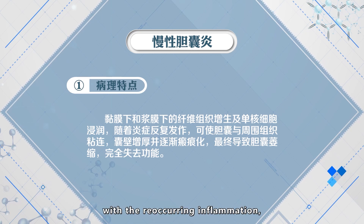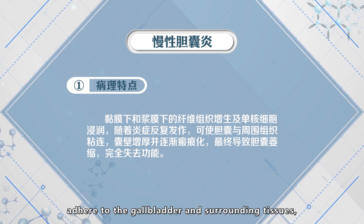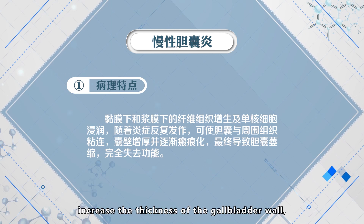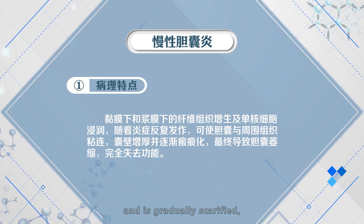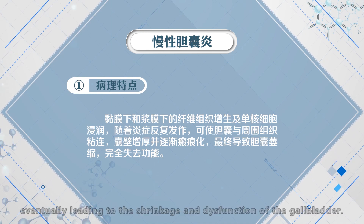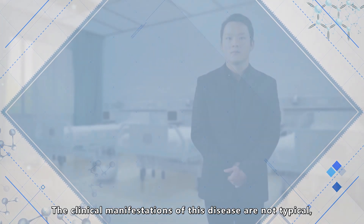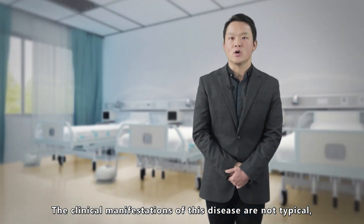With recurring inflammation, these changes may adhere to the gallbladder and surrounding tissues, increasing the thickness of the gallbladder wall, which becomes gradually fibrosed, eventually leading to the shrinkage and dysfunction of the gallbladder.